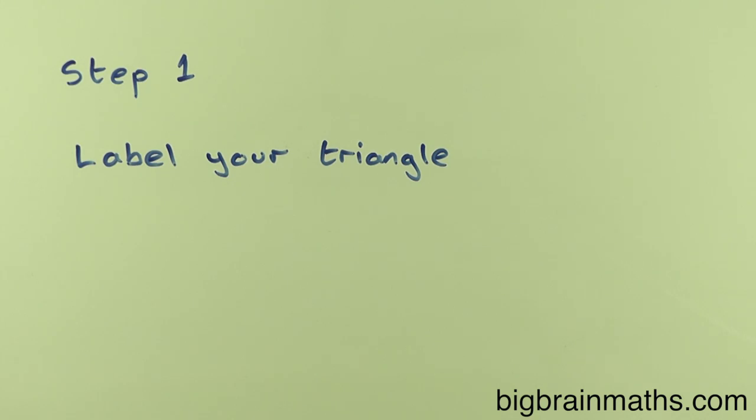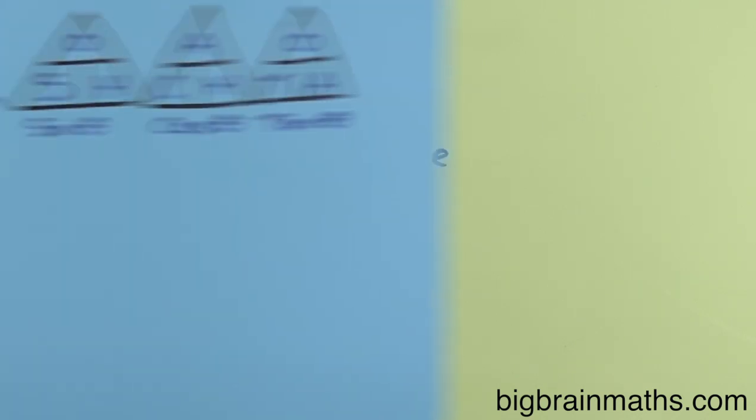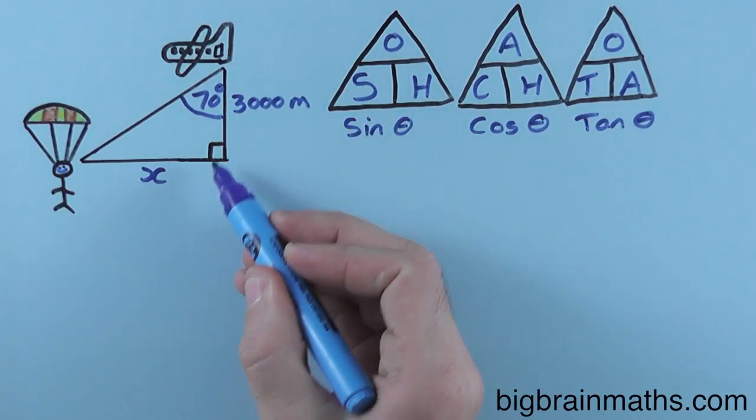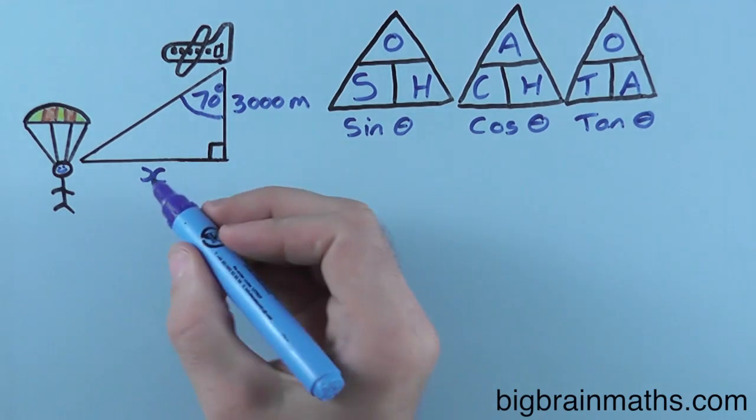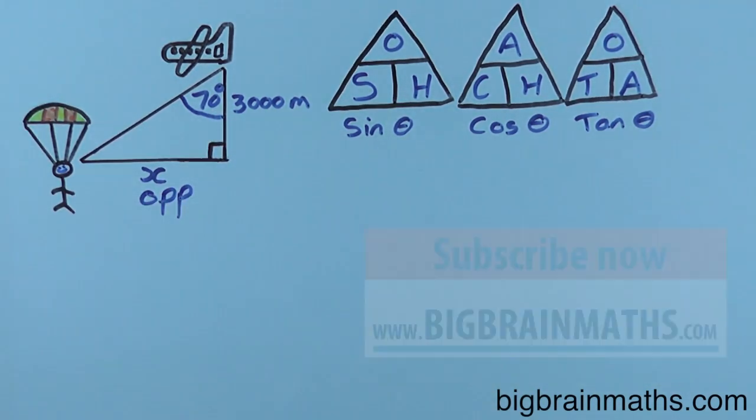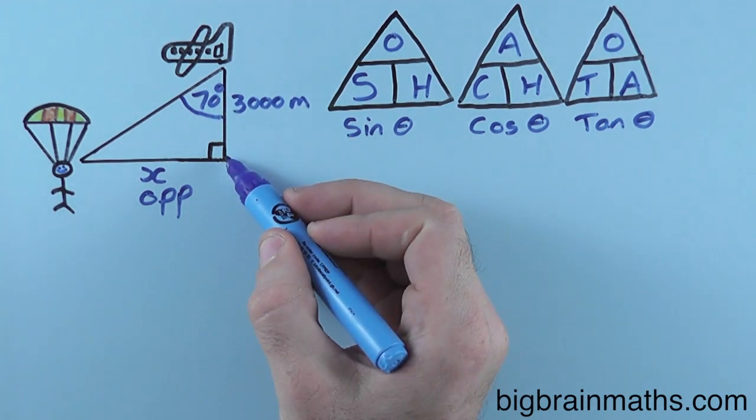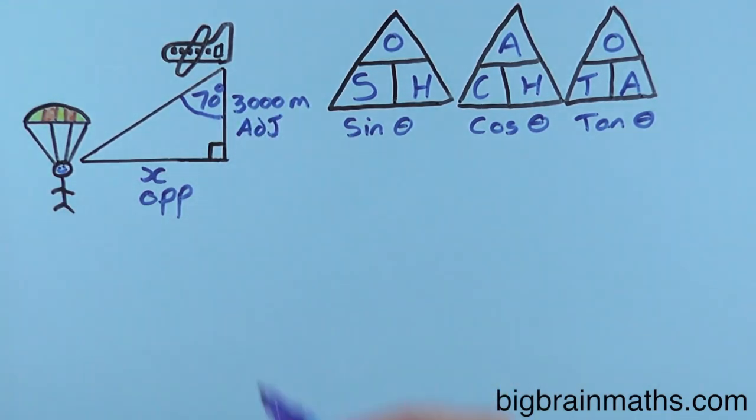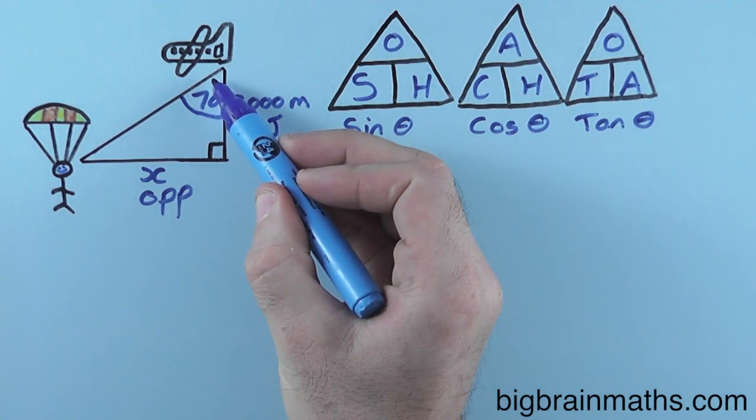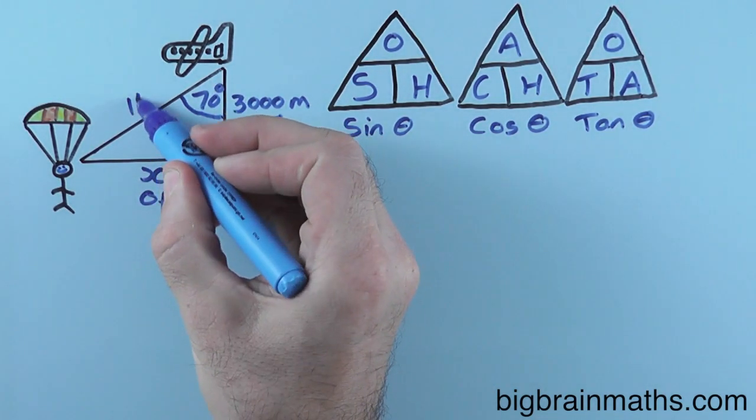Step 1: Label your triangle. This length here is opposite the angle that we're given, so this length is called the opposite. This length here is between the angle we're given and the right angle, so it's labelled the adjacent. And this length here is the longest side of the triangle, which is labelled the hypotenuse.